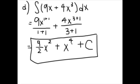Part D is the integral of 9x plus 4x to the 3rd dx. You take the antiderivative, which is 9x to the 1 plus 1 over 1 plus 1 plus 4x to the 3 plus 1 over 3 plus 1. Simplifying gives 9 over 2 x squared plus x to the 4th plus C.